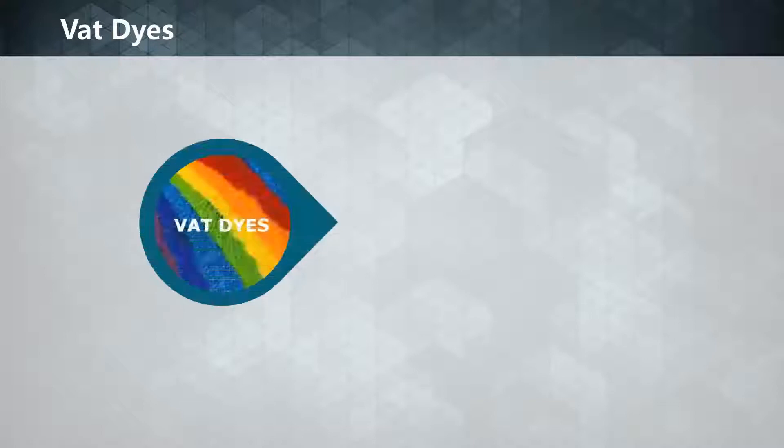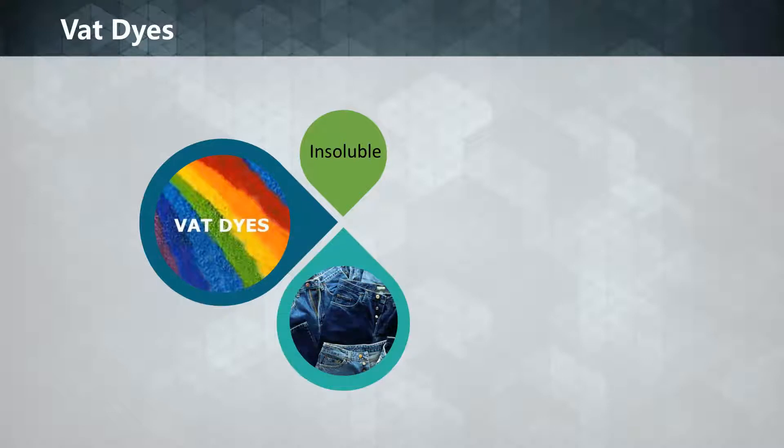Vat dyes are usually insoluble in water and do not dye the fibers directly. Reduction in alkaline liquor produces the water-soluble salt of the dye, which has an affinity for the textile fiber. The color of denim is from the original vat dye, indigo.